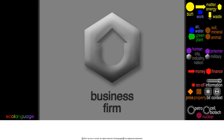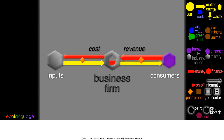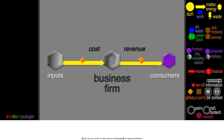The basic idea of capitalism is to make a profit. A business firm uses inputs to make a product to sell to consumers. It receives the revenue, pays the cost, and keeps the profit. It is a two-way flow: matter and energy flow one way, and money flows the other way.